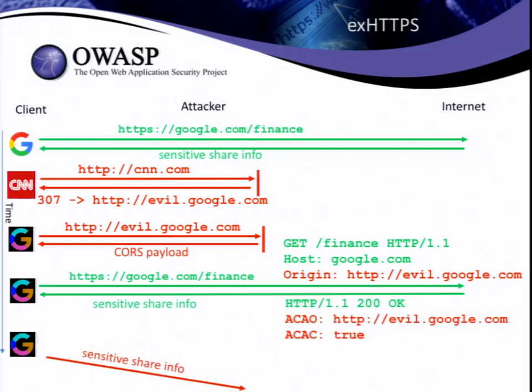In this case, they've tried to load cnn.com and I'm redirecting them to http.sub.evil.google.com. The browser automatically loads this unencrypted page, so I can intercept the request and send my own response — some malicious JavaScript using CORS. This JavaScript sends a request to Google Finance. Google Finance sees this request coming from http.evil.google.com, and as we've seen, they trust that origin. So they grant access and this sensitive share information is passed to a fake website I made over HTTP, running my own JavaScript, which posts that data off to me.